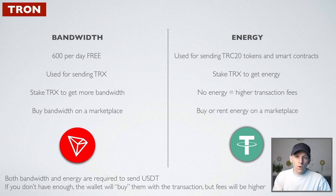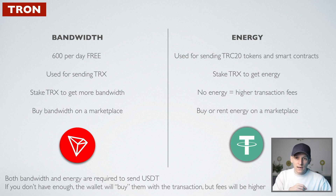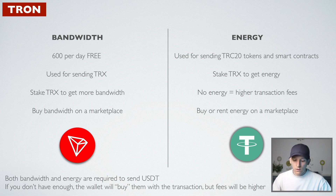Every single blockchain requires a transaction fee when we carry out transactions. Whether you want to send a token, whether you want to interact with a smart contract, all of that requires a fee. Usually on blockchains, you take the layer one coin — on the Tron blockchain that's TRX — and pay an amount of that as a transaction fee. Tron actually splits this up into two different sections known as bandwidth and energy.